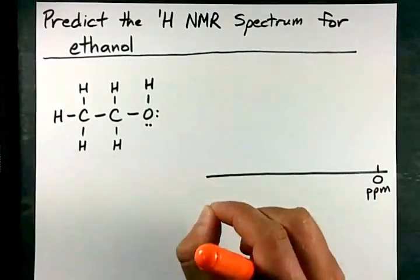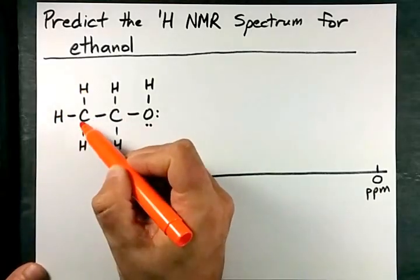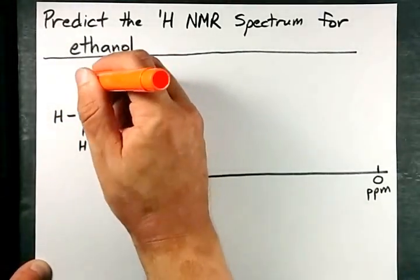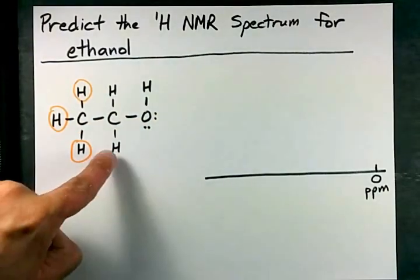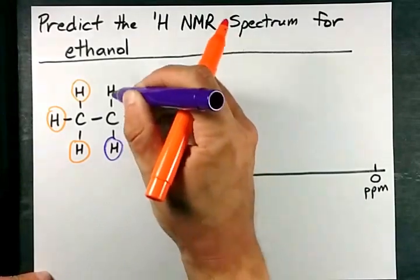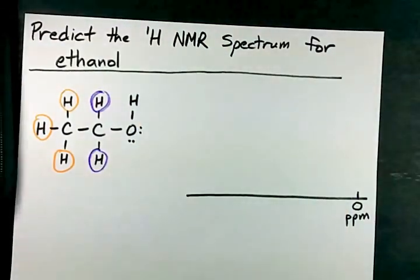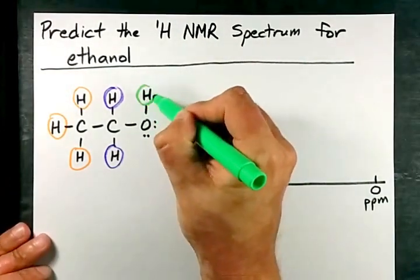Step one is to find the equivalent hydrogens on the molecule. These three H's are all connected to the same carbon, so they are equivalent to each other. These two hydrogens are connected to the same carbon, so they're equivalent to each other, and this H over here is on its own in the molecule. It's not equivalent to anything else.